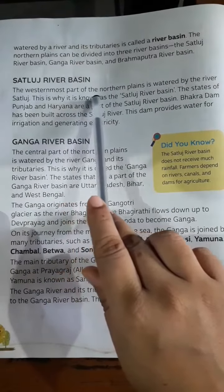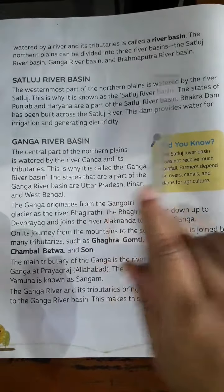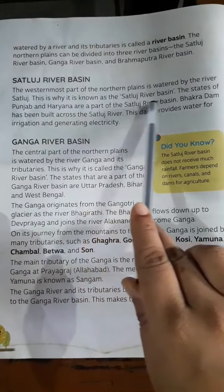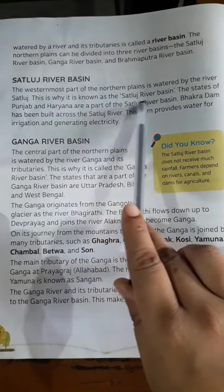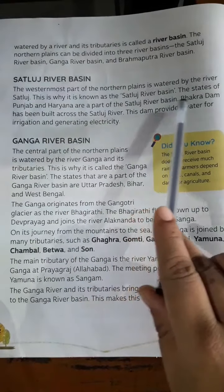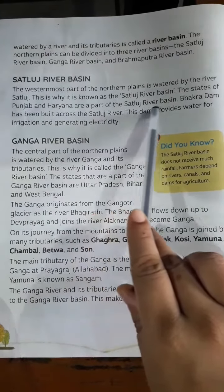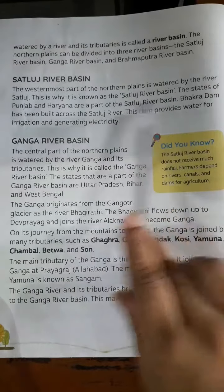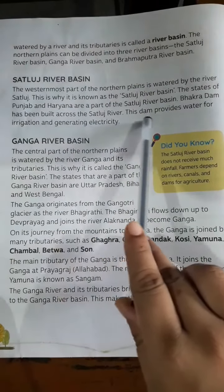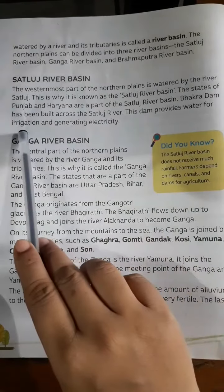The westernmost part of the Northern Plains is watered by the river Satluj. The states of Punjab and Haryana are part of the Satluj river basin. A dam on this river provides water for irrigation and generating electricity.